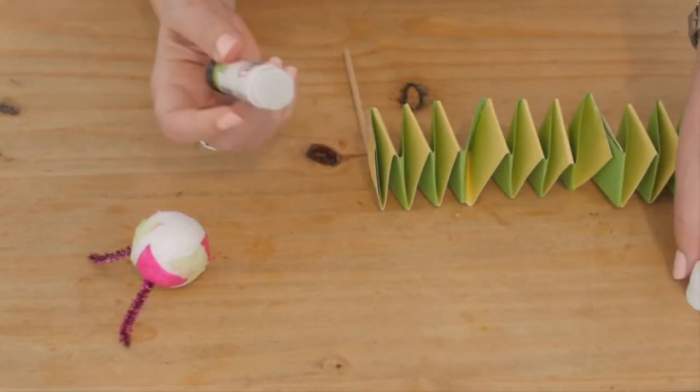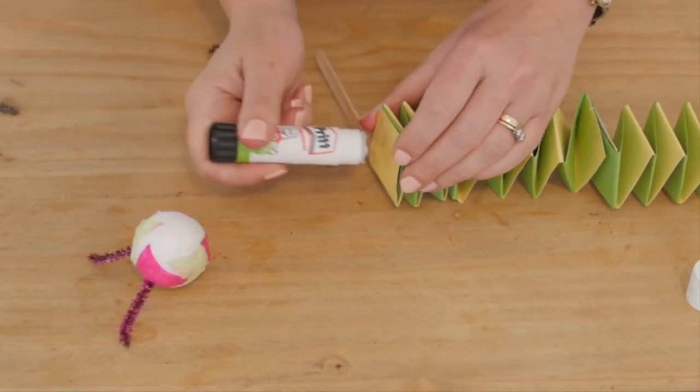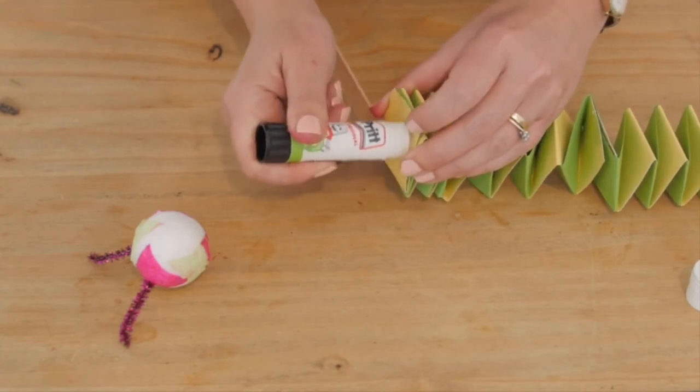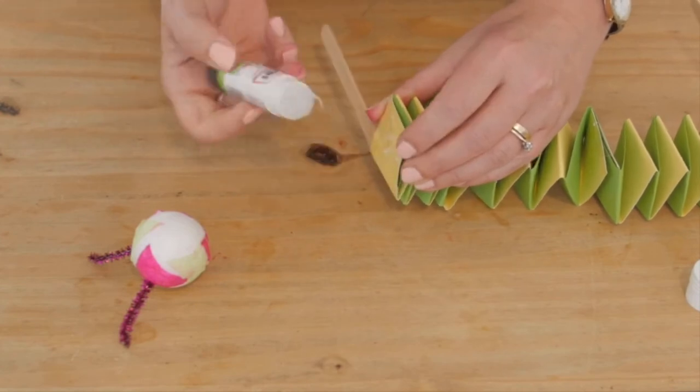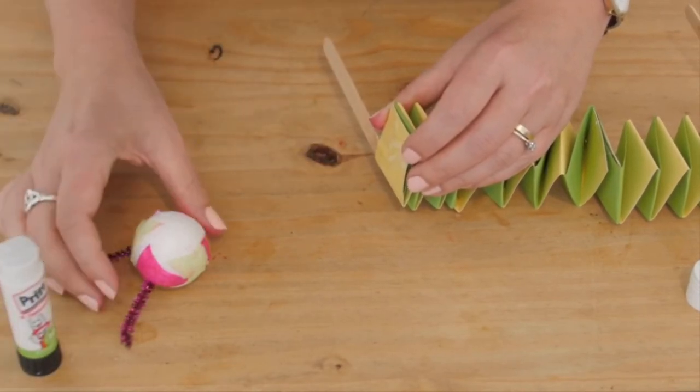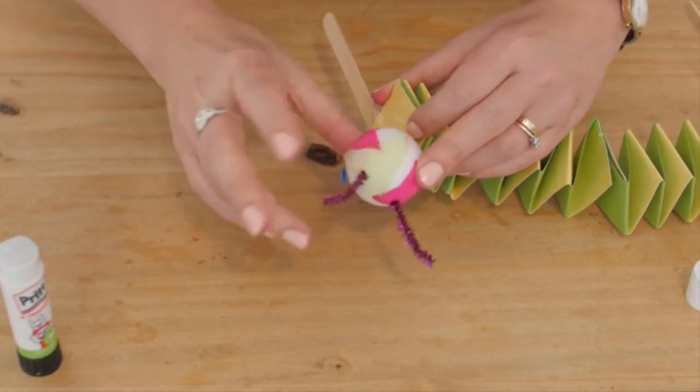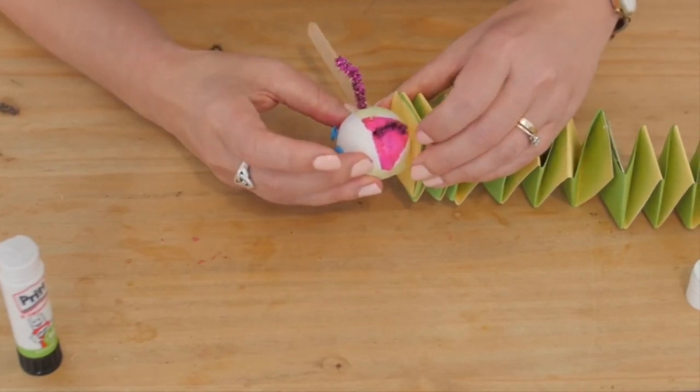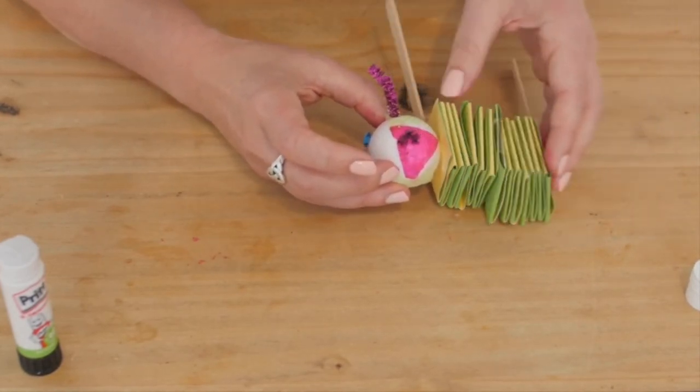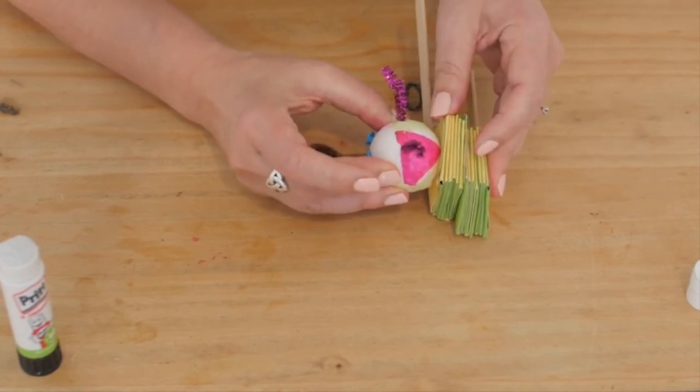And now to stick the head on I am going to use a glue stick and we are going to try and put quite a bit of glue for this bit. If you want to use something stronger you can. And then we are going to take our head and we are just going to hold that into place. Sometimes I feel it is easier to give it quite a bit of pressure for this bit.